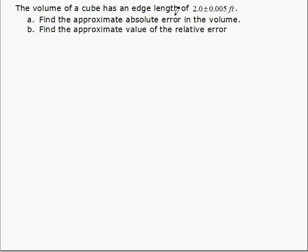The volume of a cube has an edge length of 0.2 plus or minus 0.005 feet. Really, the cube has an edge length of this, and we're interested in the volume. Find the approximate absolute error in the volume.